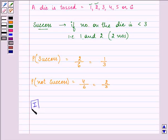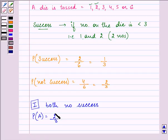So, firstly, if both times no success happens, so it will be 2 by 3. That is, probability of occurring this event will be equal to 2 by 3 into 2 by 3 because both the times we are not getting a success. So, it is equal to 4 by 9.